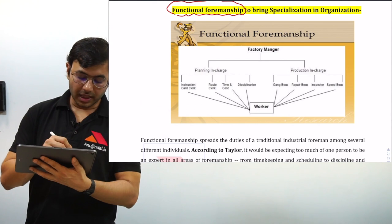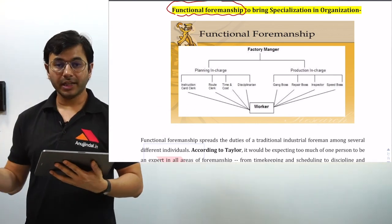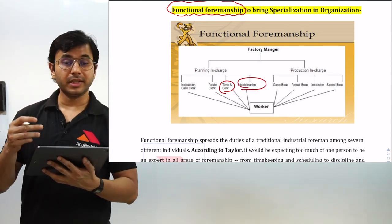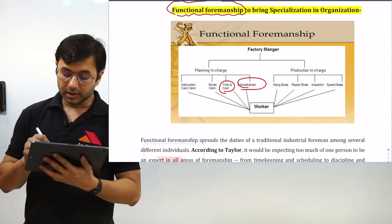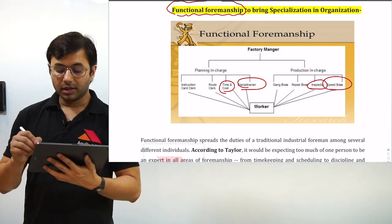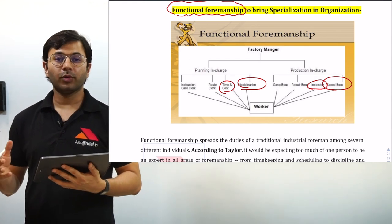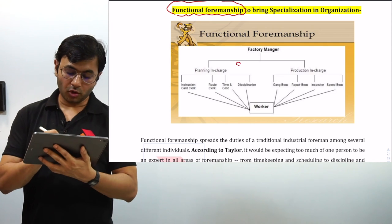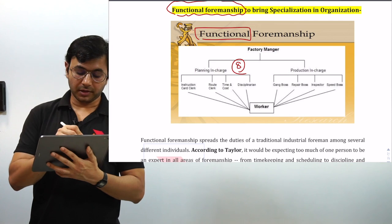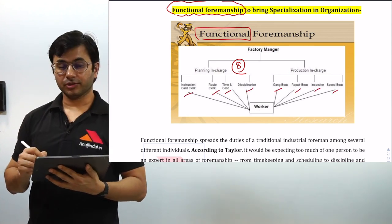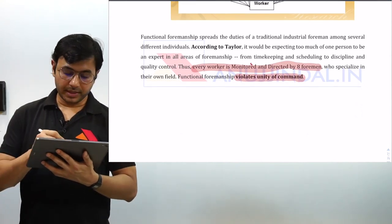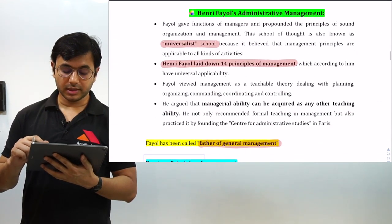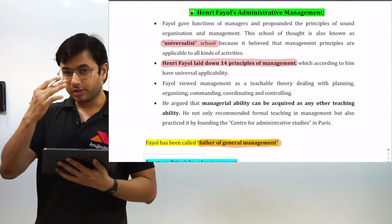Functional foremanship says clearly that every worker is not working only in one part — he is doing a variety of things, such as being involved in cost control, discipline, inspection, and speed-related work. All these are activities which every worker is simultaneously involved in. To ensure that these activities are regulated properly, every worker needs to be managed by a total of eight foremen, split between planning in charge and production in charge. According to Taylor, this completely violates unity of command, which is explained in more detail under Fayol's administrative management.